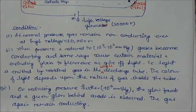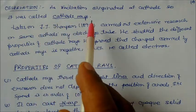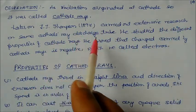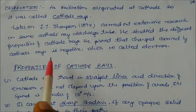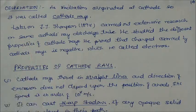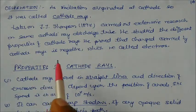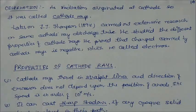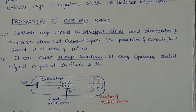The radiation originated at the cathode, so it was called cathode rays. Later, J.J. Thomson in 1897 carried out extensive research on the cathode ray discharge tube. He studied the different properties of cathode rays and proved that the charge carried by cathode rays is negative. That is why maximum credit goes to Thomson for the discovery of electrons. The main contributions came from Plücker, then Crookes, then Thomson.